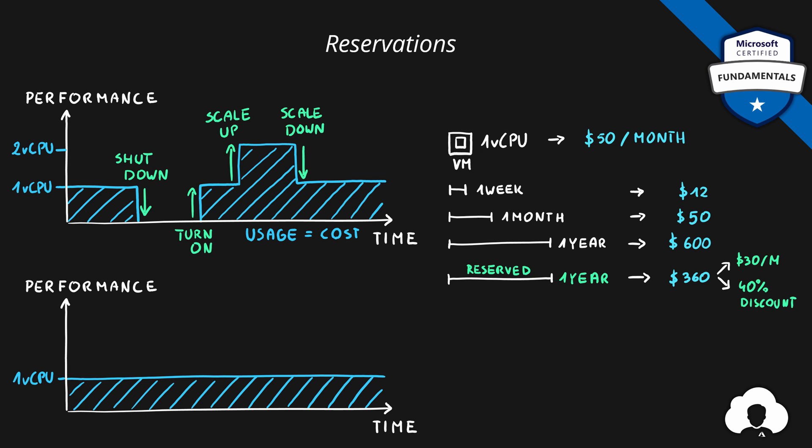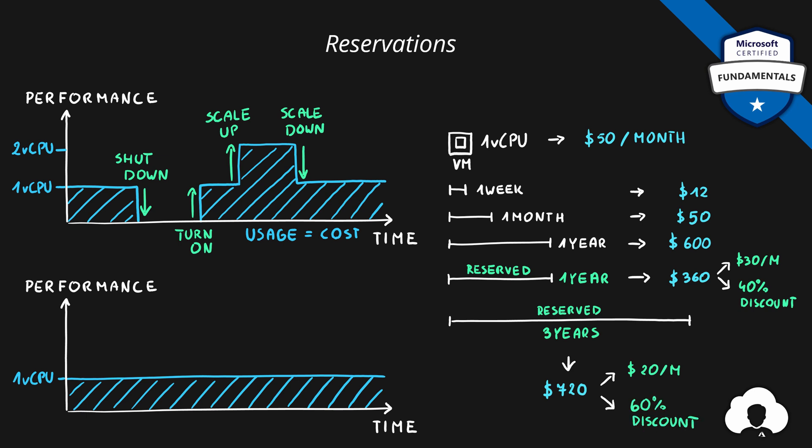Reservations can also be made for a longer period of three years. In that case you would pay $720 for three years, making it only $20 per month — a 60% discount. This is an amazing way to save a lot of money, especially for large environments with stable workloads that rely on certain services running all the time.